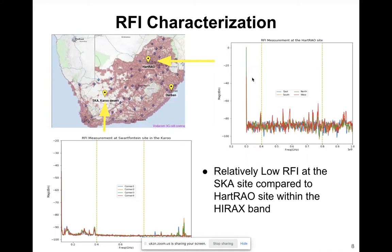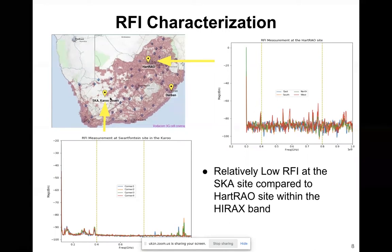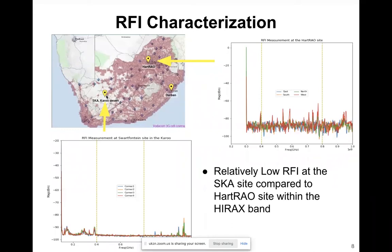We did measurements at four cardinal points. You can see this site is quite contaminated with RFI. We also performed RFI measurements at the SKA site — the Shortfontein site — where IRAQS will eventually be located.